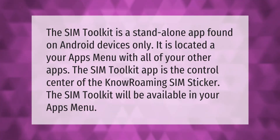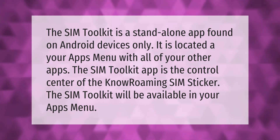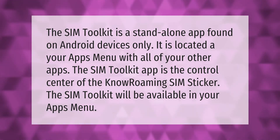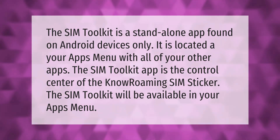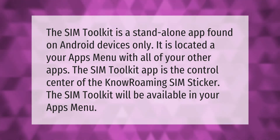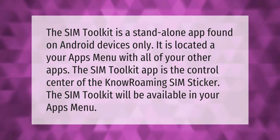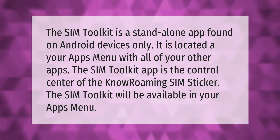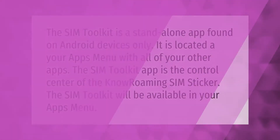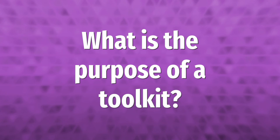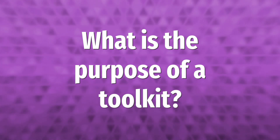The SIM Toolkit is a standalone app found on Android devices only. It is located in your apps menu with all your other apps. The SIM Toolkit app is the control center of the no-roaming SIM sticker, and will be available in your app's menu.